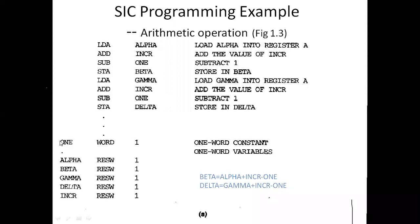The operation to perform is: BETA = ALPHA + INCR - 1, and similarly DELTA = GAMMA + INCR - 1. First, we load the ALPHA value into accumulator register A using LDA ALPHA. Then we add INCR to the accumulator using ADD INCR. Then we subtract 1 using SUB ONE. Finally, we store the accumulator value into BETA using STA BETA.